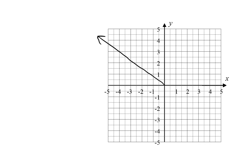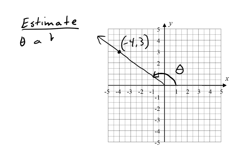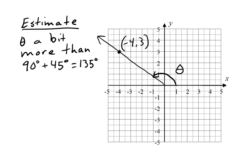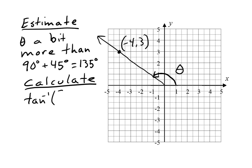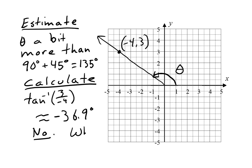Now we consider an angle in the second quadrant where x is negative and y is positive. This angle is just a bit more than halfway from the y-axis to the negative end of the x-axis, so a bit more than 45 degrees past 90 degrees. I'm estimating it as a bit more than 135 degrees. Next we calculate it. The inverse tangent of y over x is the inverse tangent of 3 over negative 4, which gives us an angle of negative 36.9 degrees. That's not even close to the estimate. What went wrong?